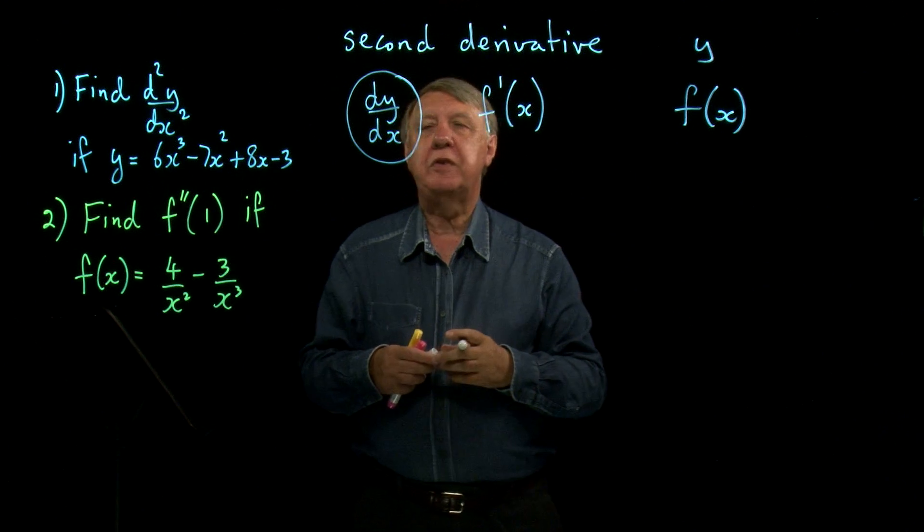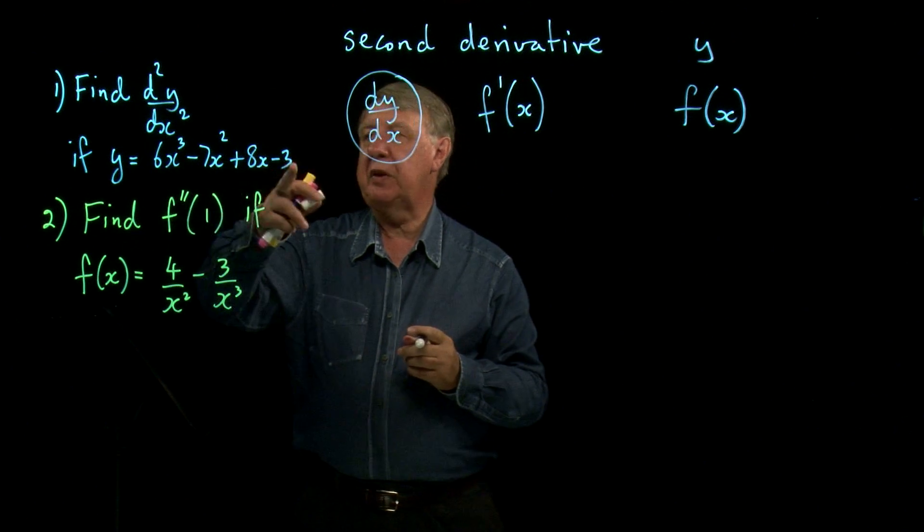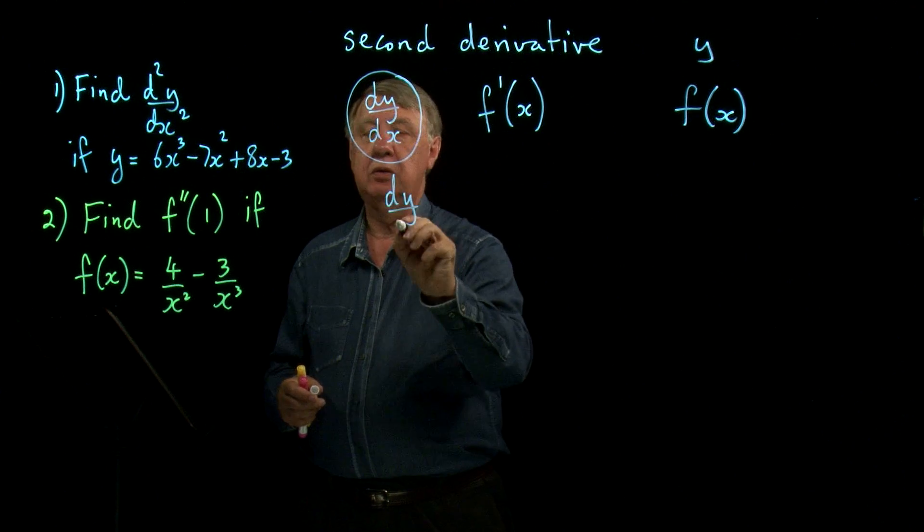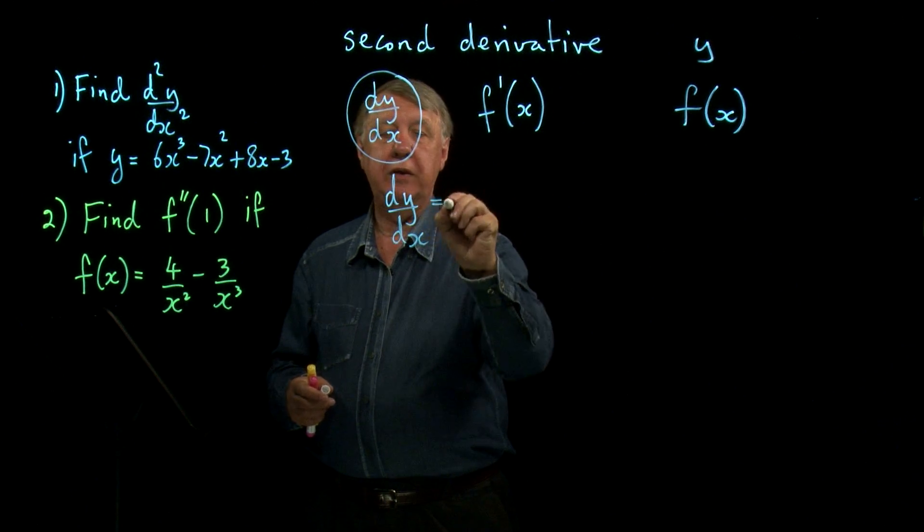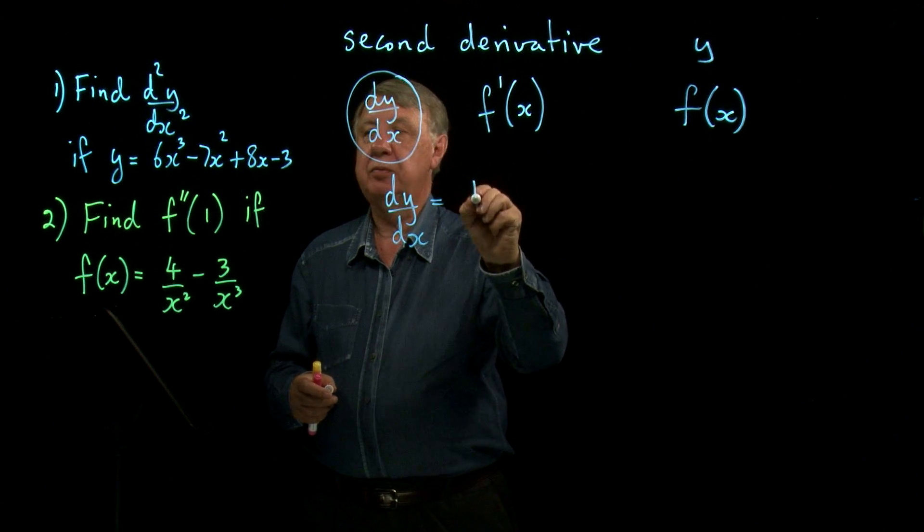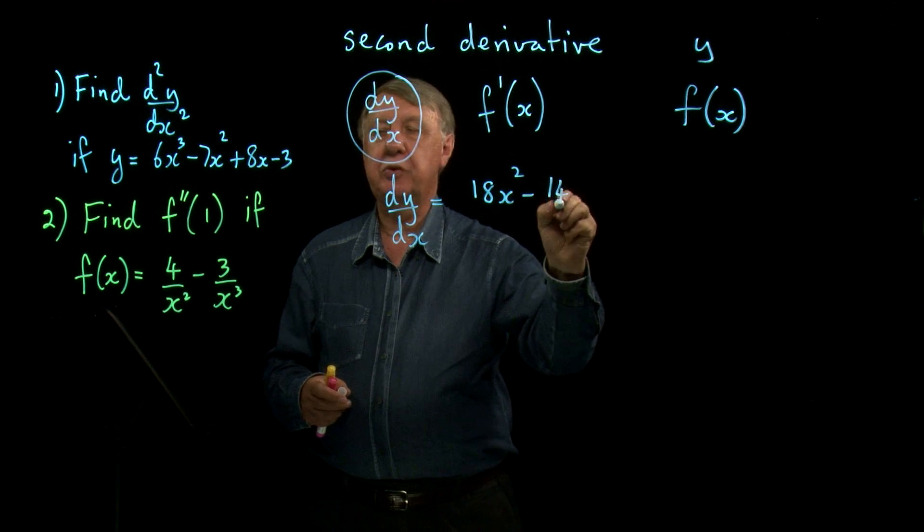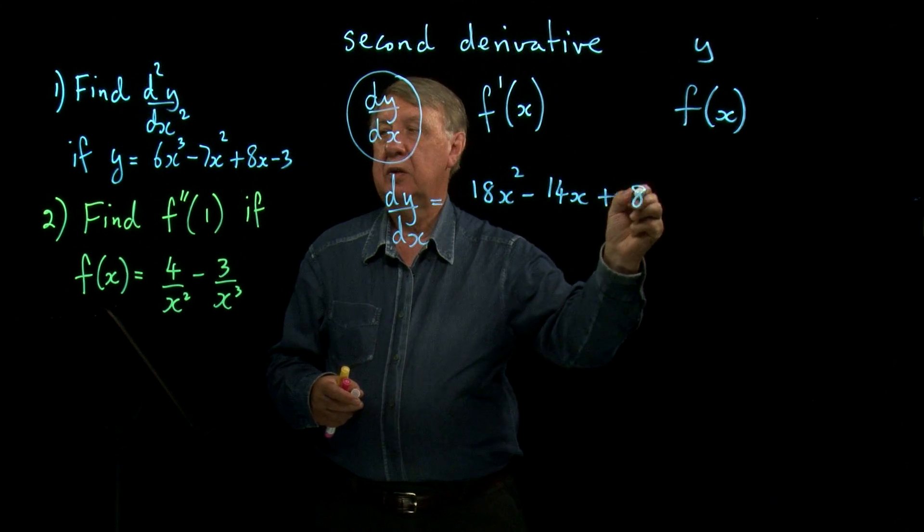So there's no reason. So if we look at our first example here, if I start with y equals that, then I can differentiate it and I get 18x squared minus 14x plus 8.